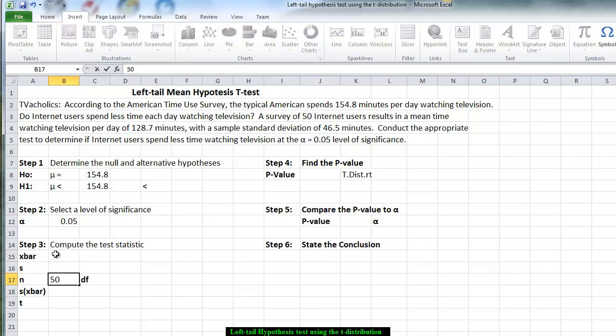Since we're told that 50 people were surveyed, that is a large enough sample to automatically tell us that the distribution is approximately normal. We are told that the average time they watch television is 128 and 7 tenths of a minute, and the sample standard deviation is 46 and 5 tenths of a minute.